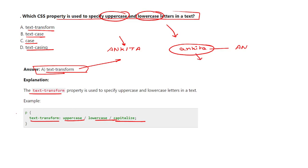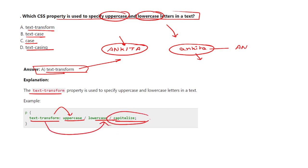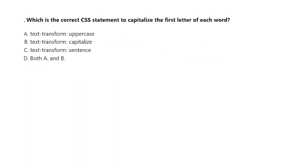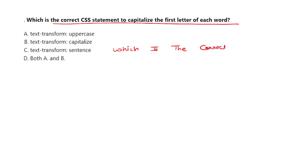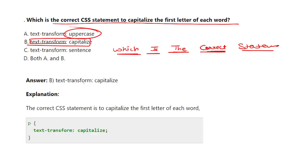If your paragraph is in lowercase letters, you should give text-transform: uppercase. If you already have the paragraph in uppercase, you can write text-transform: lowercase. The next question covers capitalize — which is the correct CSS statement to capitalize the first letter of each word? For a statement where every word's first letter is capital, you write text-transform: capitalize.